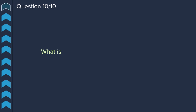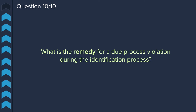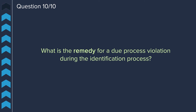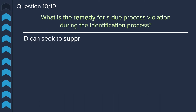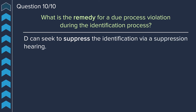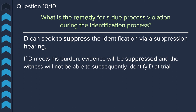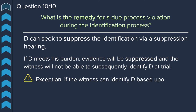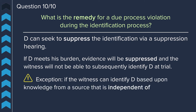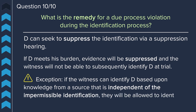Question ten: what is the remedy for a due process violation during the identification process? The defendant can seek to suppress the identification via a suppression hearing. If the defendant meets his burden, the evidence will be suppressed and the witness will not be able to subsequently identify the defendant at trial. There is an exception, however — if the witness can identify the defendant based upon knowledge from a source independent of the impermissible identification, they will be allowed to identify the defendant at trial.